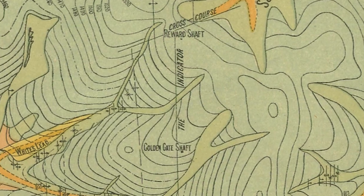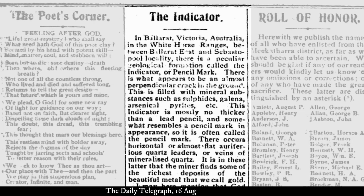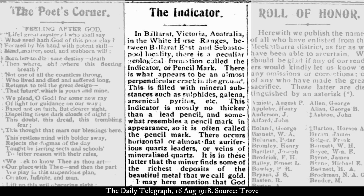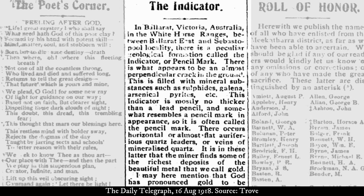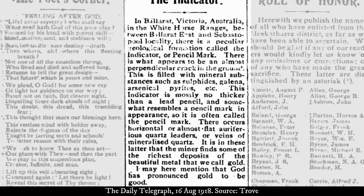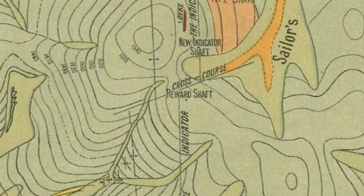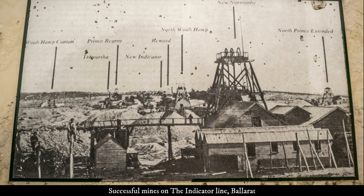Another feature you may come across are indicator lines. Ballarat miners discovered around the 1870s that where thin bands of dark slates crossed the quartz veins, the quartz was often unusually rich in gold. By following these slate lines miners could locate the rich spots along the reefs with less work. These lines of slate became known as the indicator.